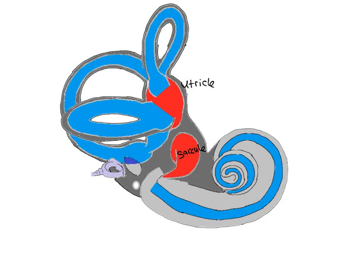Then we have these loops: a superior loop, a posterior loop, and a horizontal or lateral loop. These are semicircular canals. Now imagine that all of the white is bony structure - all of this surrounding everything is bony structure. The canals in the bony structure we're going to call the bony labyrinth. Inside of the bony labyrinth we have these membrane structures, and the membranes themselves we call the membranous labyrinth. That also goes for the cochlea.